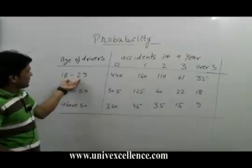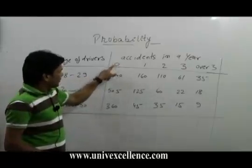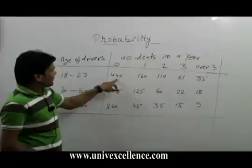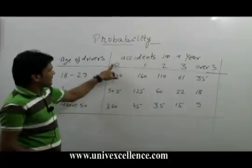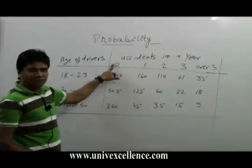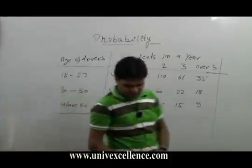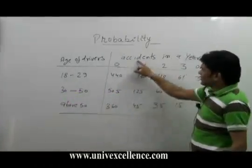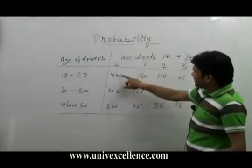The driver's age. Accident in AR is 0 — there were 440 times. Then accident in AR is 0, exactly 0 accidents: 440.